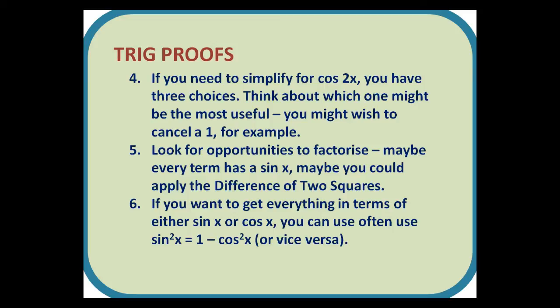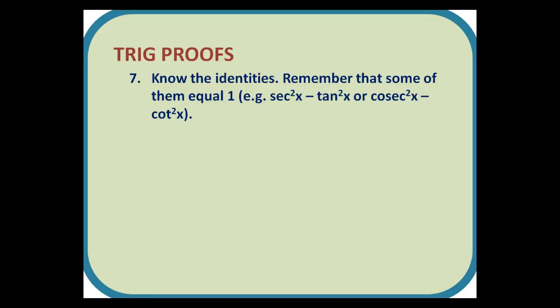Number 5: Look for opportunities to factorize. Maybe every term has a sin x. Maybe you could apply the difference of two squares. 6: If you want to get everything in terms of either sin x or cos x, you can often use sin²x = 1 - cos²x, or vice versa. And 7: Know the identities. Remember that some of them equal 1. For example, sec²x - tan²x, or cosec²x - cot²x.